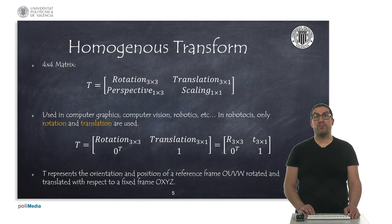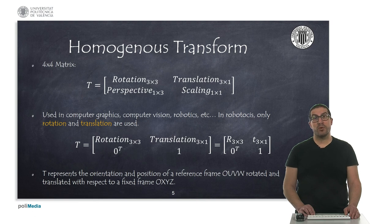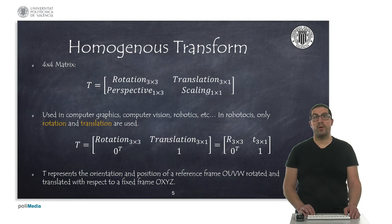A homogeneous transformation matrix is a 4x4 matrix that includes the four elements mentioned. They are used in applications such as computer graphics, vision systems, robotics, among other fields. In robotics, we use a simplification in which we only consider rotation and translation components, and therefore a homogeneous transformation matrix will always look like the one shown below.